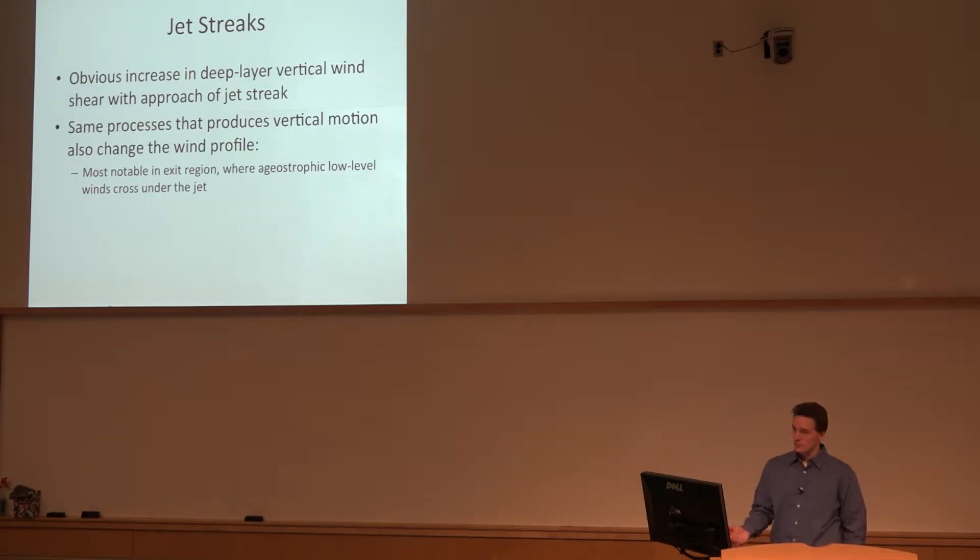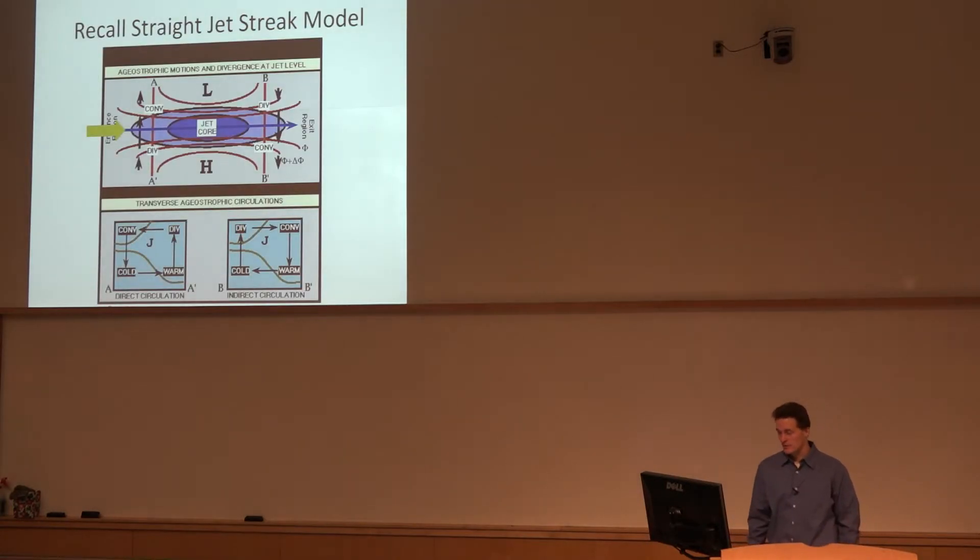It's the ageostrophic response. If we put this in quasi-geostrophic terms, it's the part of the wind that we don't let do any advecting, but it's the response to the geostrophic portion of the advections, which is a simplification of what's happening on the large scale. We'll show an example of the straight jet streak model where you refer to the entrance and exit regions of the jet, which should sound familiar.